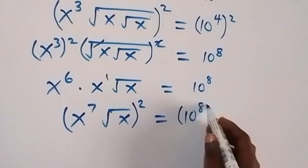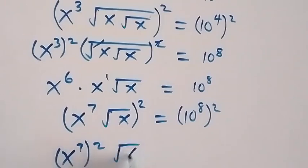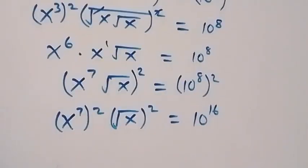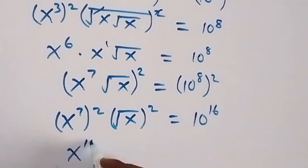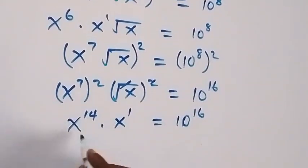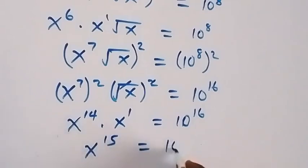So we square both sides once more. The square affects these two: that's x raised to power 7 squared, times root x squared, equals 10 raised to power 16. This gives x raised to power 14, and the square cancels the square root, leaving x, so x raised to power 14 times x equals 10 raised to power 16. Bringing it together, that's x raised to power 15 equals 10 raised to power 16.